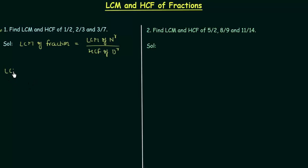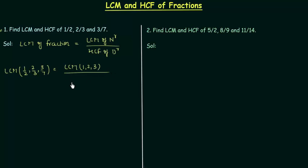To find the LCM of 1/2, 2/3, and 3/7, we need to find the LCM of the numerators — which are 1, 2, 3 — and then find the HCF of the denominators — which are 2, 3, 7. Once we have both values, we can easily find the LCM of the fraction.